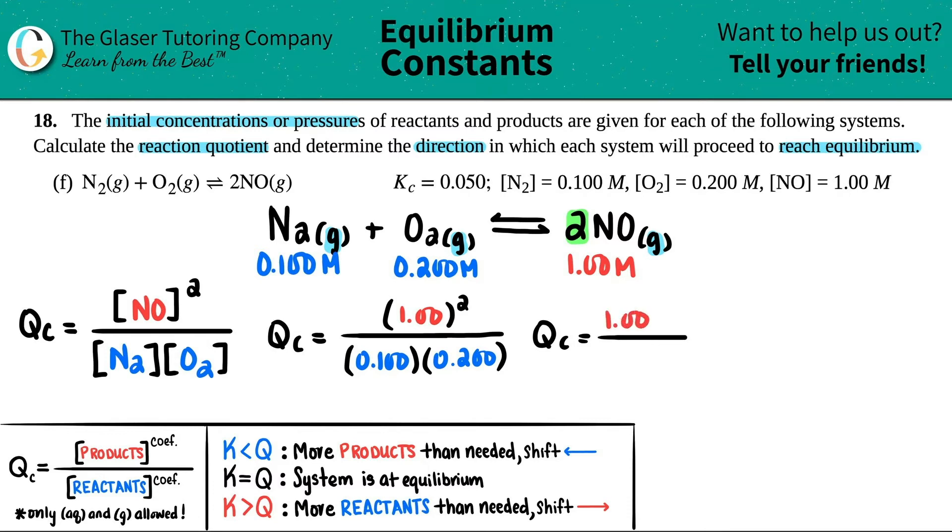And then what's the bottom? 0.1 times 0.2, I get 0.02. Maybe I'll just extend the couple of zeros if we want to include the sig figs, but who cares? QC equals whatever this is, 1 divided by 0.02, I get 50. So if you wanted to keep the sig figs, this would be 50.0, but I don't really care. So I'm just going to leave it as 50.